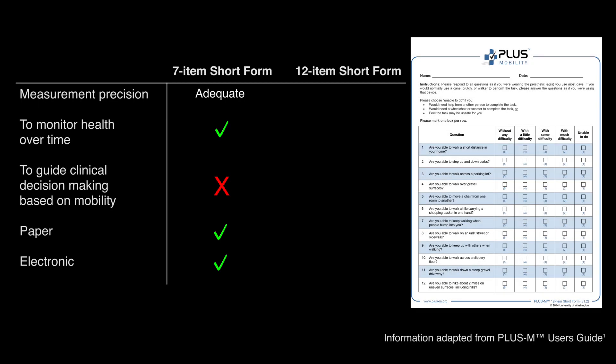The 12-item short form provides excellent measurement precision and is recommended when clinical decisions regarding mobility are to be made and when mobility is a primary outcome. It is available in paper or electronic form.